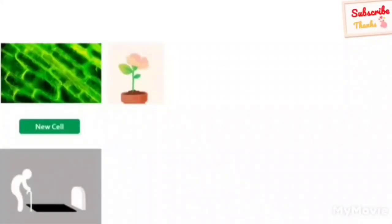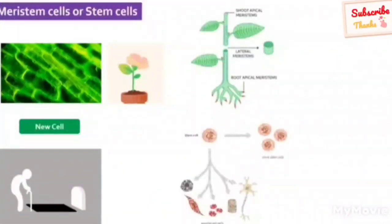Do you know what properties of cells make a plant and other organisms grow? How old cells are replaced by new ones? What is the reason for aging and death? So in today's video we will learn about a unique type of cells called meristematic cells or stem cells.